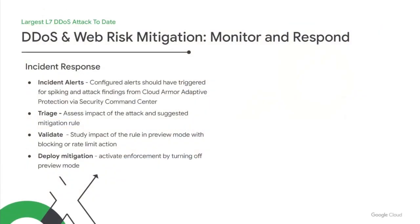I will cover incident response in the event of an attack. The response handling falls into four steps. First, the incident response should trigger on an alert already set up for spiking and attack findings from Cloud Armor via the Security Command Center. Second, track the attack alert and assess the impact of the attack on the suggested mitigation rule. Third, validate the impact of the rule in preview mode, either with a blocking action or a rate limiting action. The final step is to deploy the mitigation by turning off the preview mode. We hope that the discussed strategies, along with the tools available in Cloud Armor, will help you effectively manage the DDoS and web risk for your GCP services. Now back to Emil, who will talk about what's new in Cloud Armor.